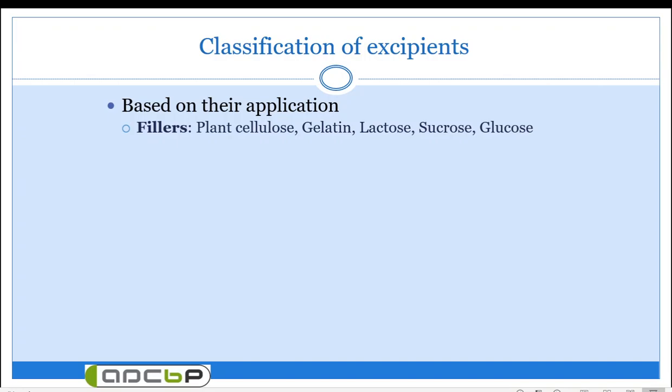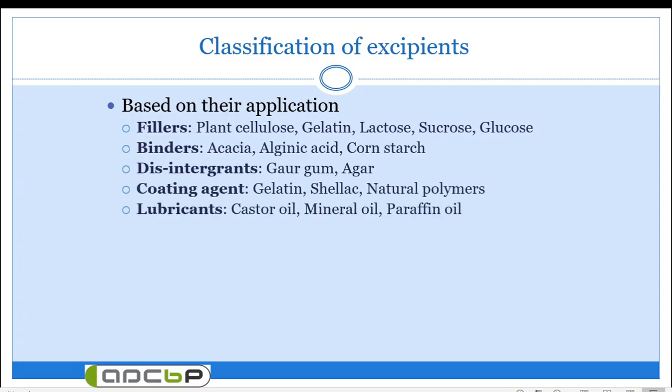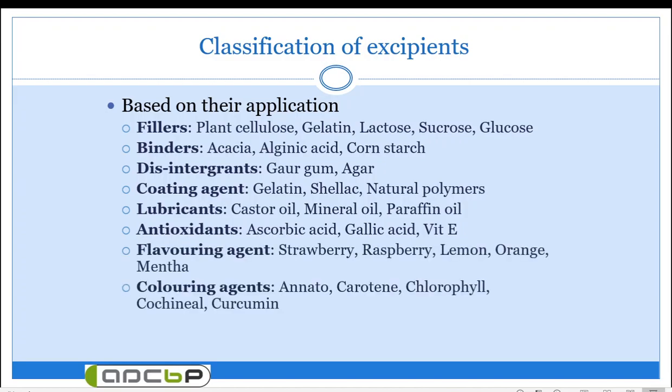Each category will be studied in detail related to herbal sources. The main application categories include fillers, binders, disintegrants, coating agents, lubricants, antioxidants, flavoring agents, and coloring agents. Examples from herbal sources: fillers — plant cellulose, gelatin, lactose, sucrose; binders — gum acacia, alginic acid, corn starch; disintegrants — guar gum and agar; coating agents — gelatin and shellac; lubricants — castor oil and mineral oil.